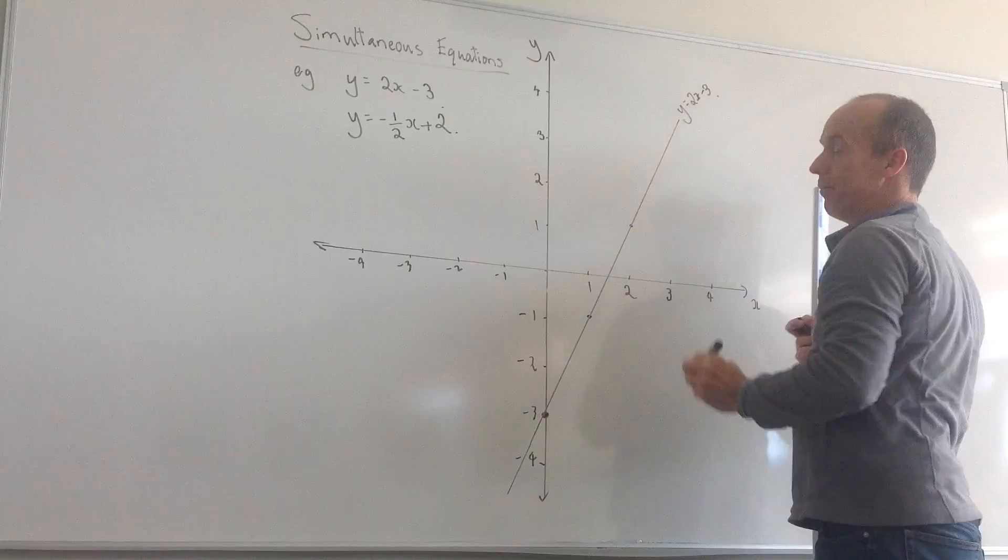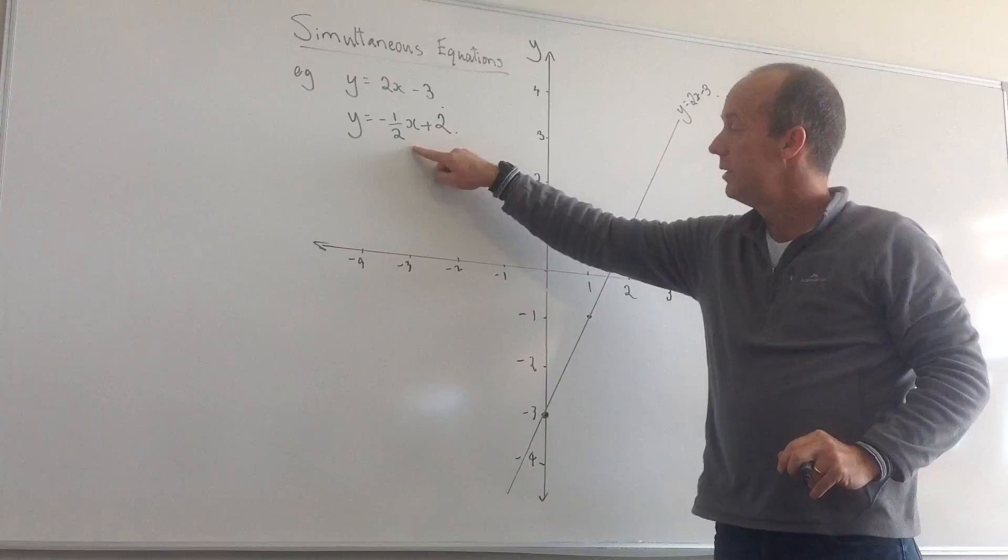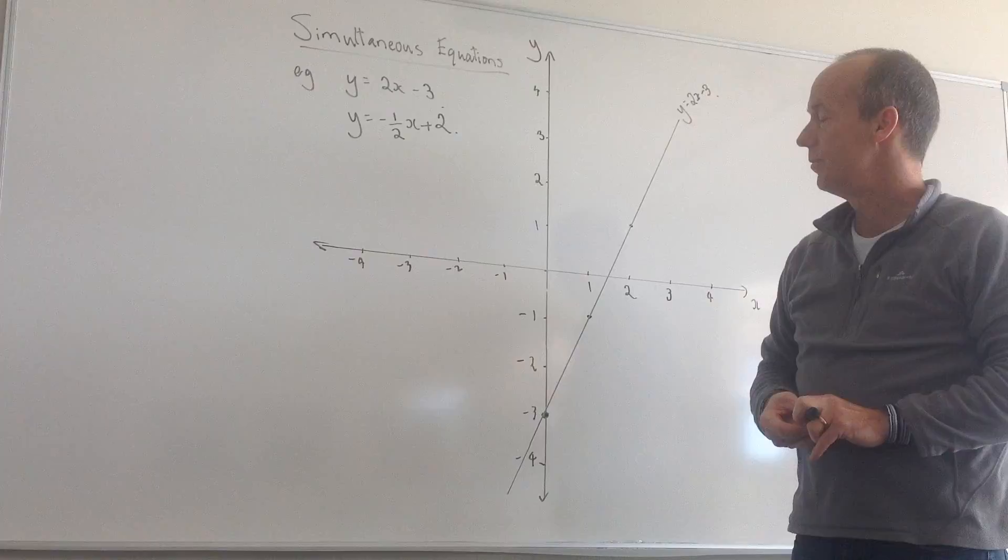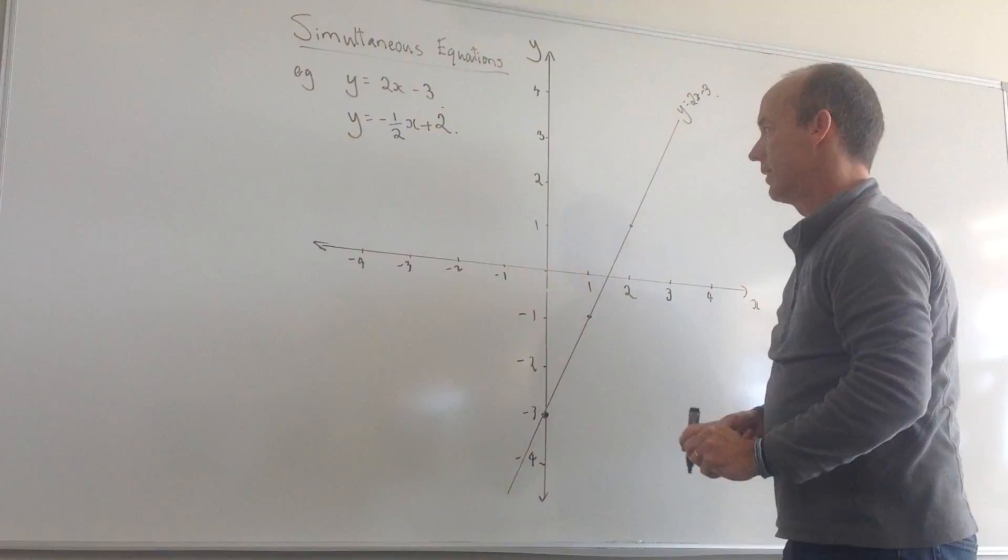Now I'm going to do the same thing for my second equation, y equals negative one-half x plus 2. We remember that my y-intercept is going to be 2 in this case. Here's that point.